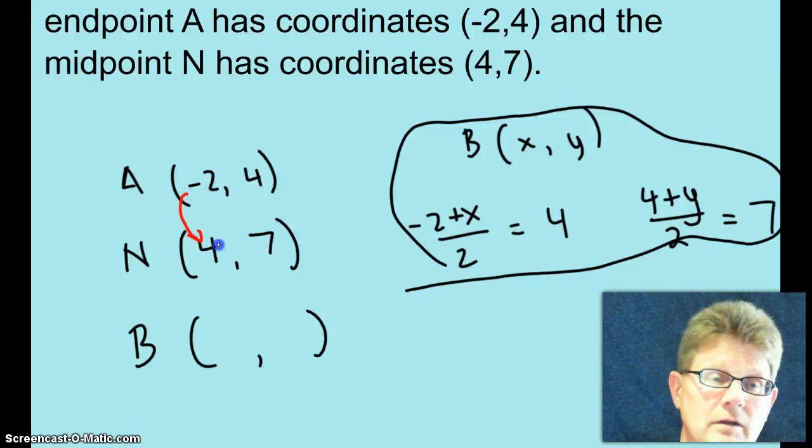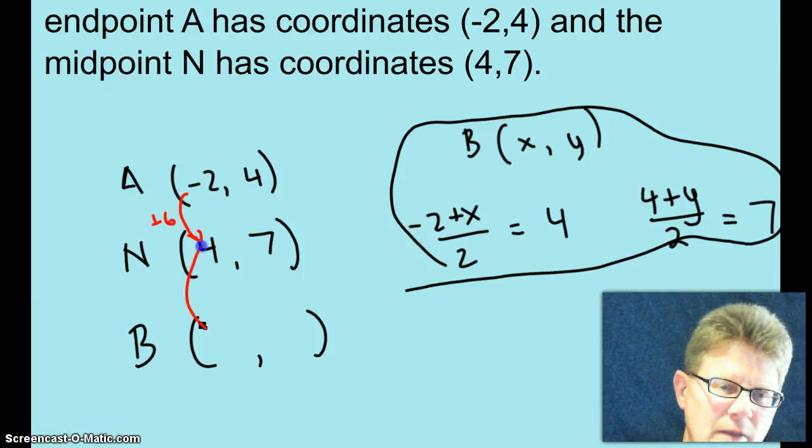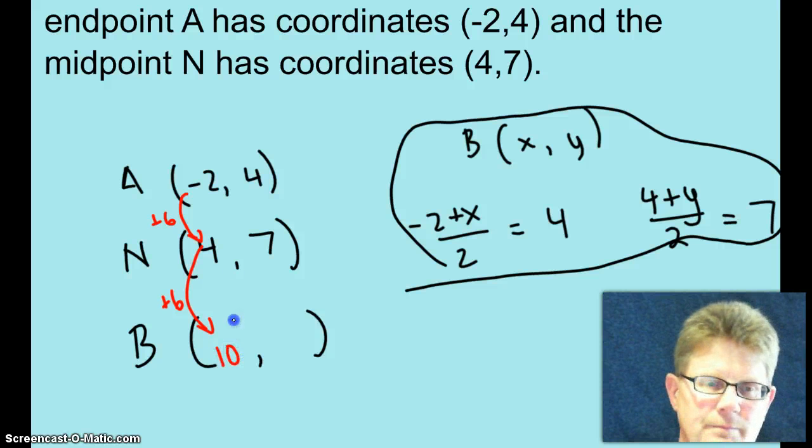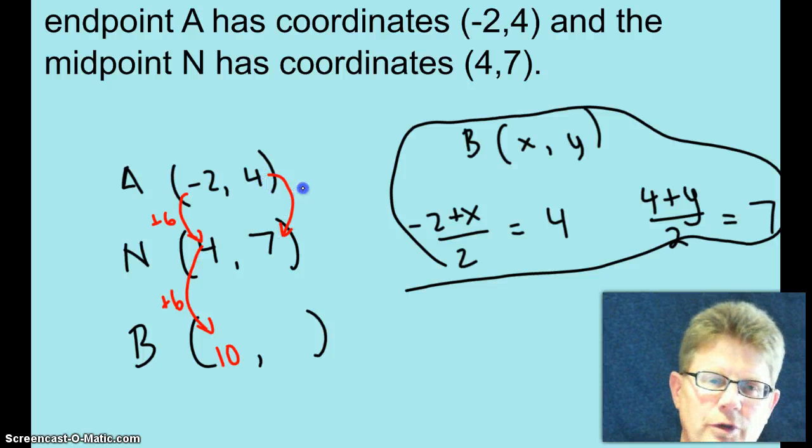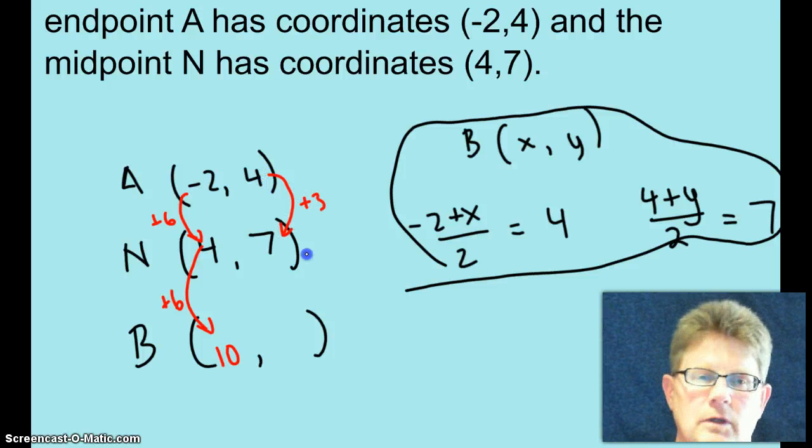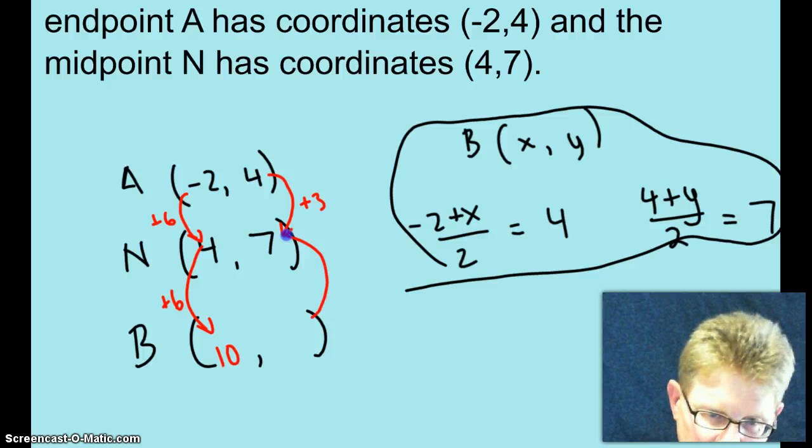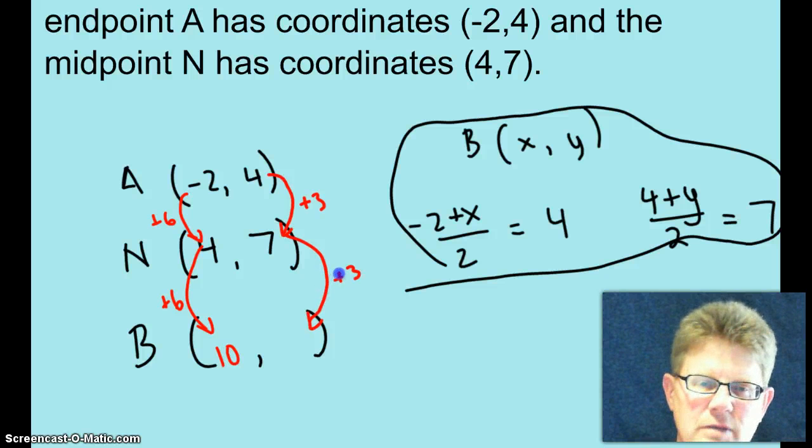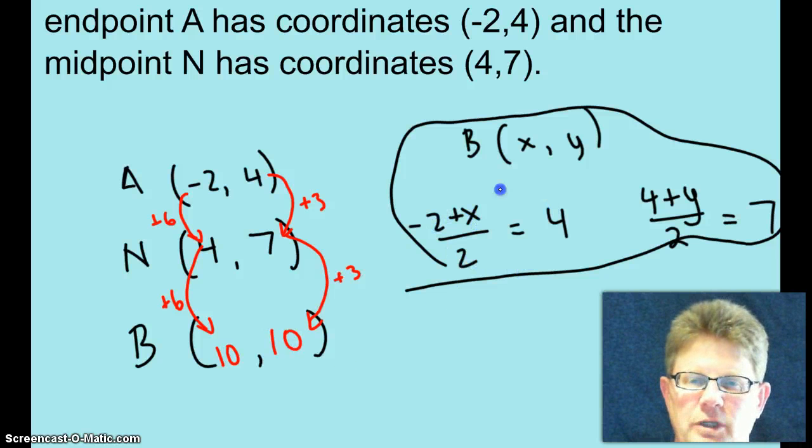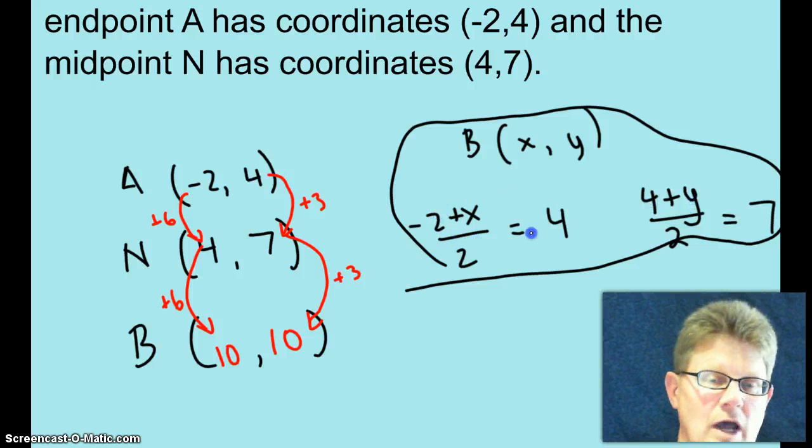To go from A to N, did the X value go up or down? Well, obviously, it went up 6. So, to go to the other endpoint, we're going to go up another 6. So, that's going to be 10. To go from the Y values from the endpoint to the midpoint, you went up 3. So, to go to the midpoint to the other endpoint, you're going to go up 3 more. Coordinates are going to be 10, 10. And if you did the algebra here, you would have also found out that X and Y are 10. I just think this is a whole lot less work.